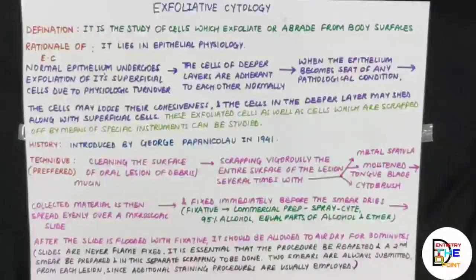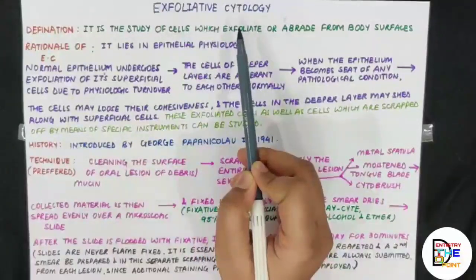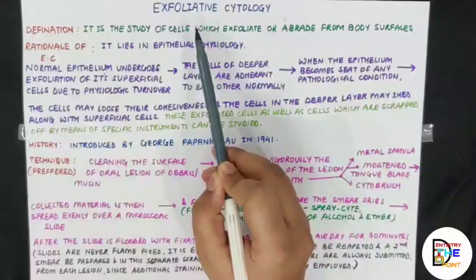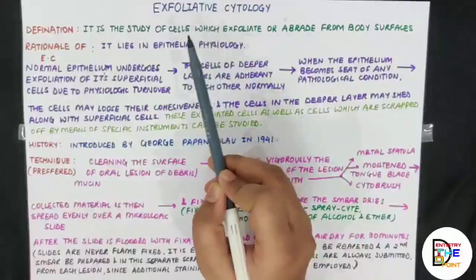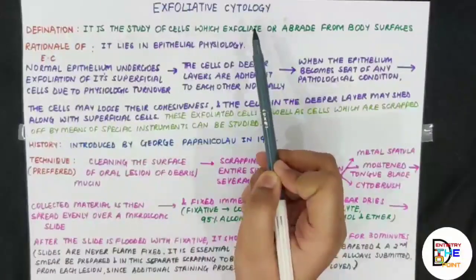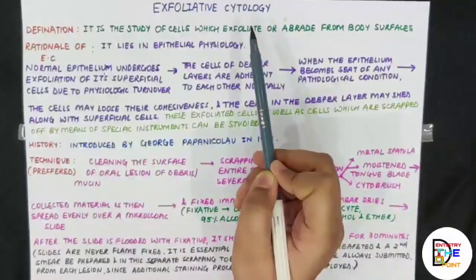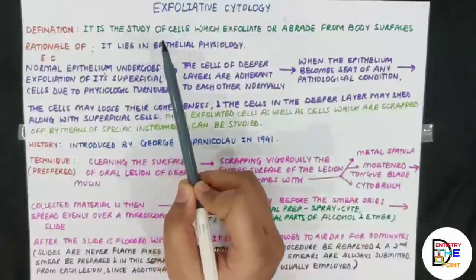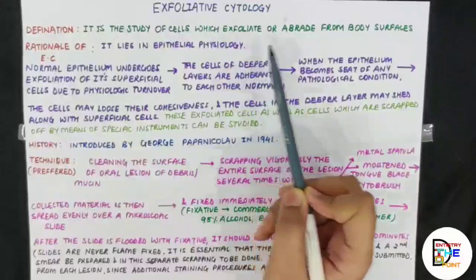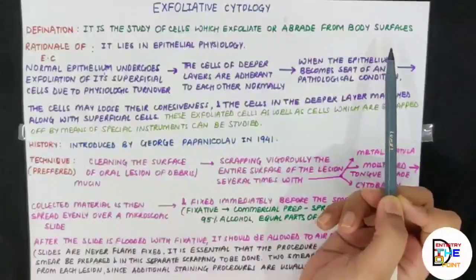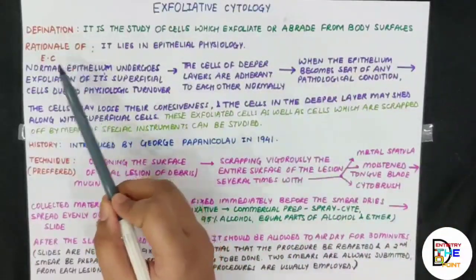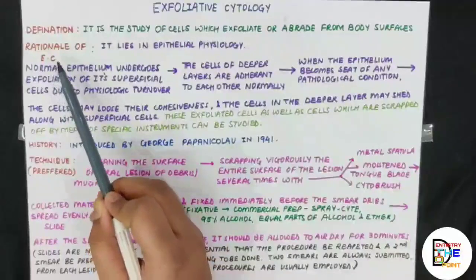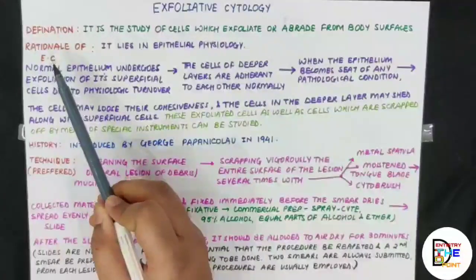Starting with exfoliative cytology — as the name suggests, 'exfoliate' means to shed off or throw off something, and 'cytology' is the study of cells. So the definition is: it is the microscopic study of cells which exfoliate or abrade from the body surface.